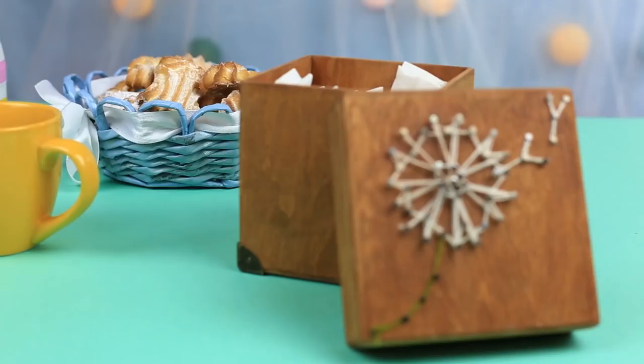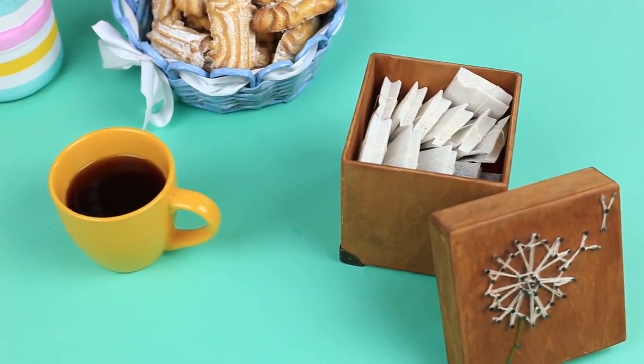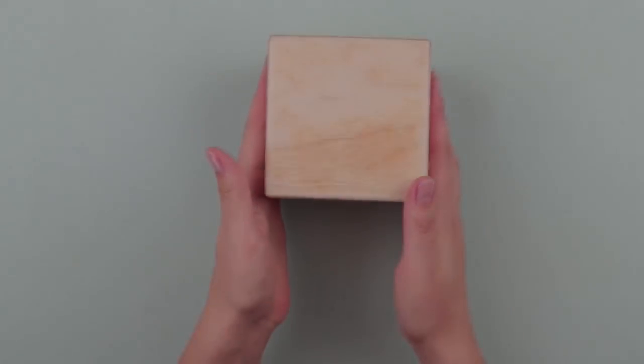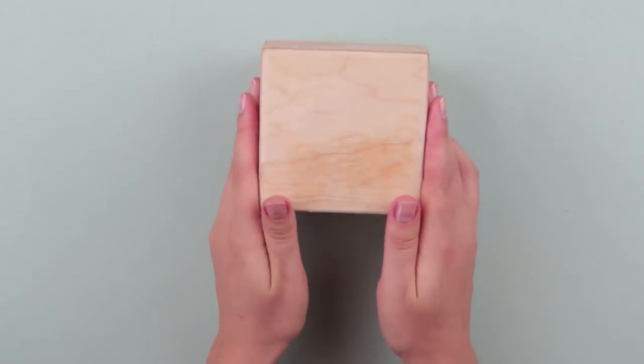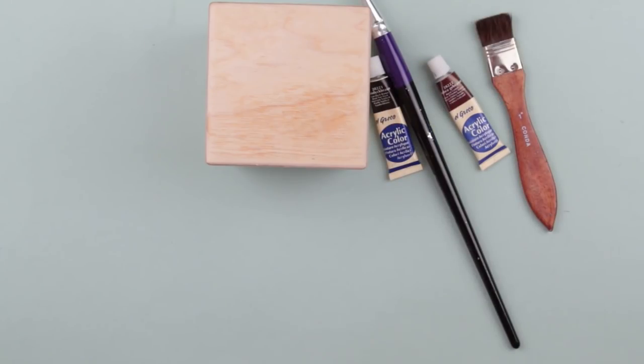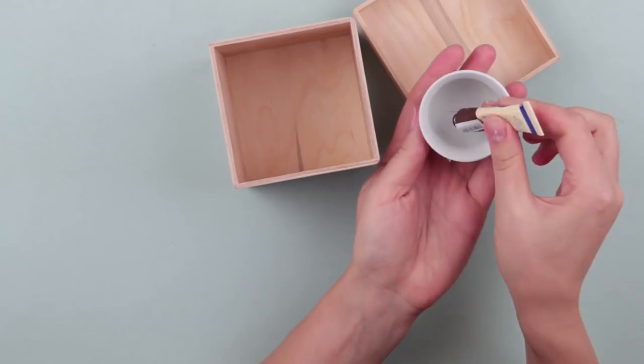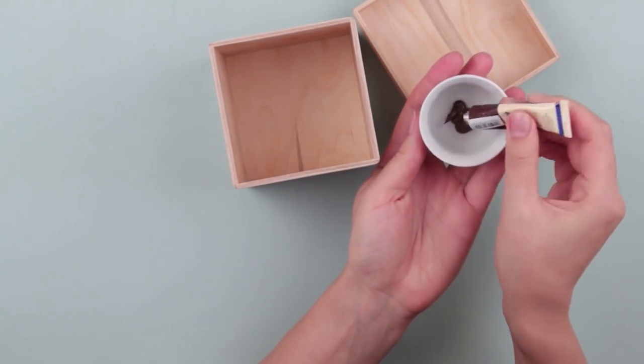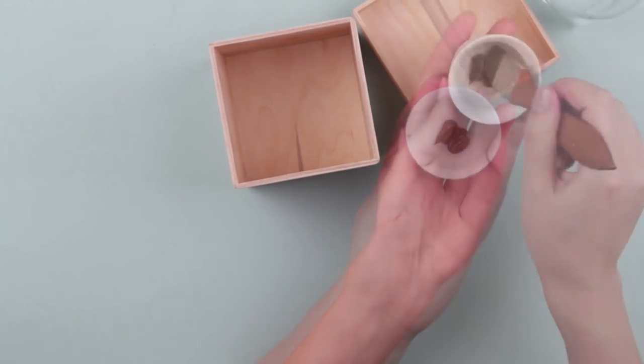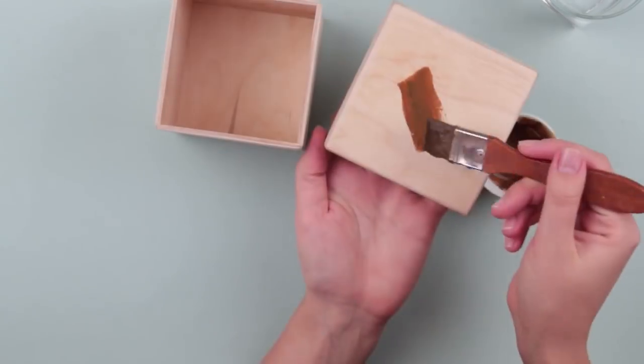In this video, we'll show how to create a floral string art pattern to decorate a wooden box. We'll need a blank wooden box, acrylic paints of brown shades, flat brushes, and water. Start by painting the wooden box. Squeeze brown paint into a cup. Mix it with water to enhance the wood pattern when applied. Paint the box.